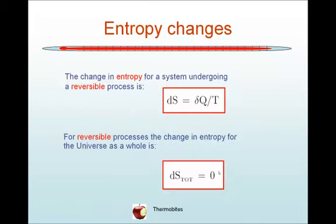The change in entropy for a system undergoing a reversible process is equal to dS, the change in entropy S, equal to δQ, the heat added divided through by the temperature. For a reversible process, the change in entropy for the universe as a whole, dS total, is equal to zero.